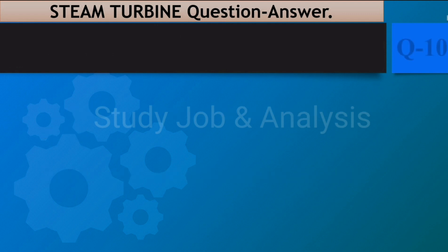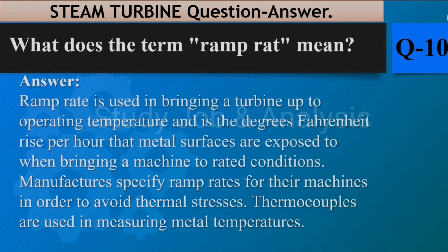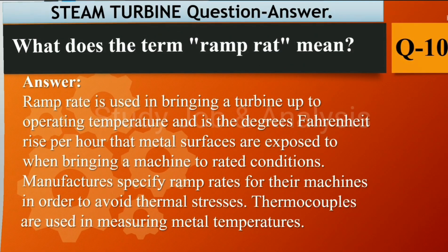Question number ten: What does the term ramp rate mean? Answer: Ramp rate is used in bringing a turbine up to operating temperature, and refers to the degrees Fahrenheit rise per hour that metal surfaces are exposed to when bringing a machine to rated conditions. Manufacturers specify ramp rates for their machines in order to avoid thermal stresses. Thermocouples are used in measuring metal temperatures.